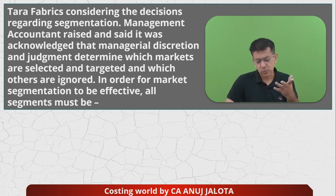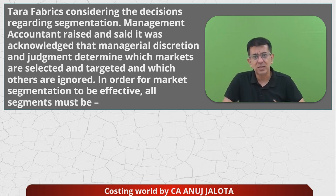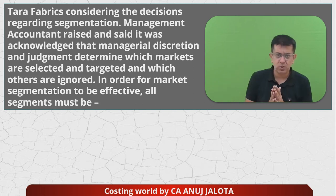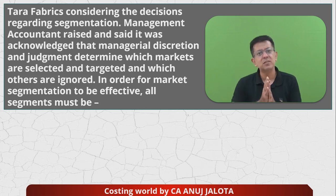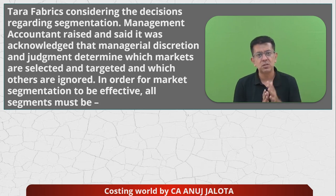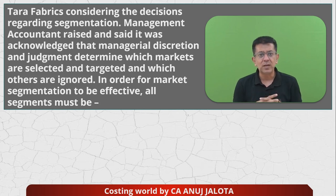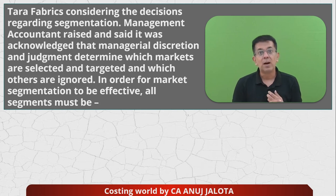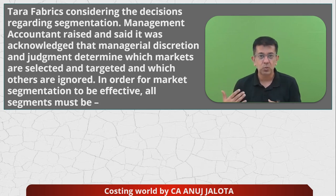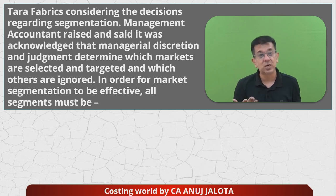You'll be knowing this from CA Inter segment reporting. Basically, every company supplies products in various markets that need to be segregated - for example, India can be divided into north, east, west, and south based on geographical area. Markets can also be segregated based on gender, age, or whether consumers are rich or poor, or even based on the urgency of the customer's need.